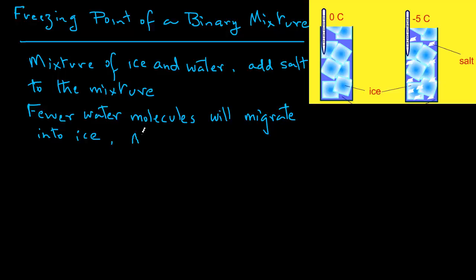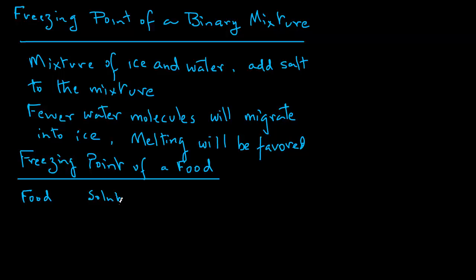Melting will be favored as more molecules from ice will have an opportunity to move into water. As a consequence, the temperature at which the melting and freezing process balance will be lowered. By adding salt to water, you lower the freezing point. When we look at the freezing point of a food,